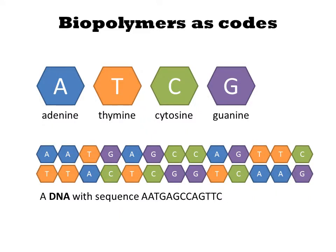DNAs are double-stranded molecules made of units very similar to RNAs. The two strands of the DNA are complementary, in the sense that an A is juxtaposed with a T, and a C is always across from a G.